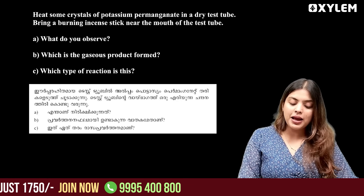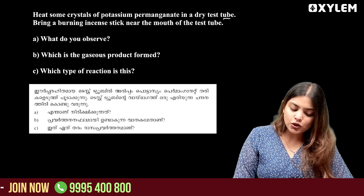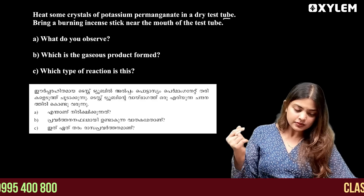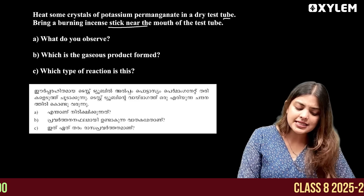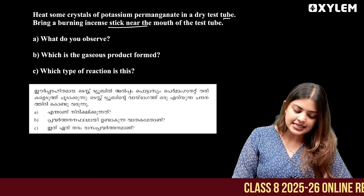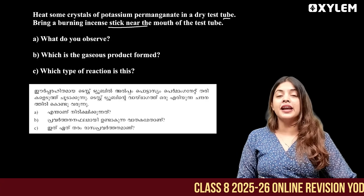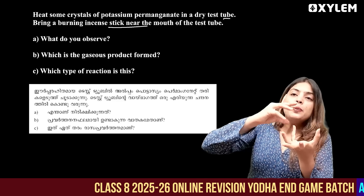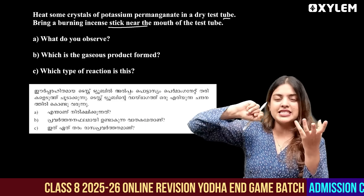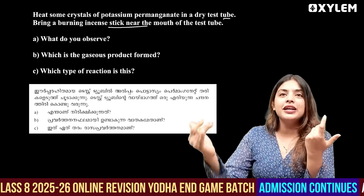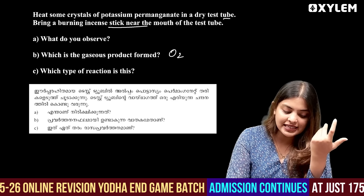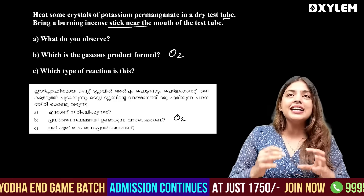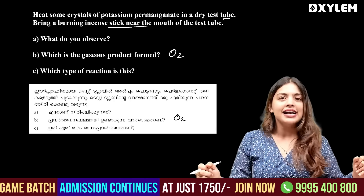Heat some crystals of potassium permanganate in a test tube. You can observe a burning incense stick glowing near the test tube. Potassium permanganate decomposes and releases oxygen gas.